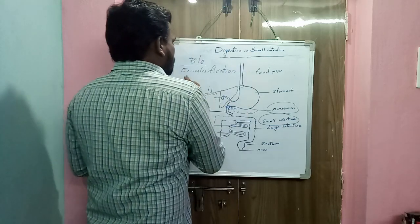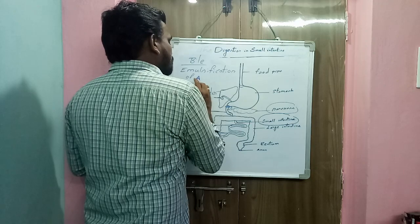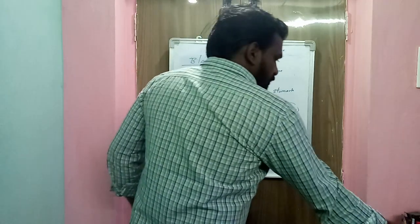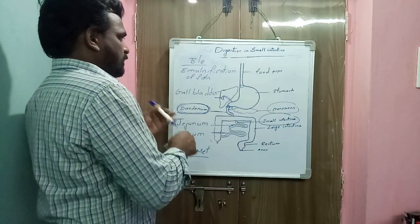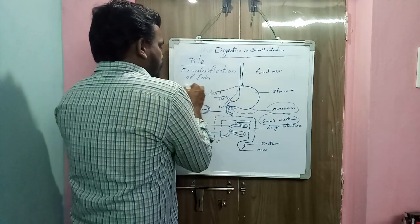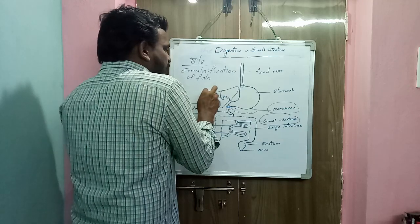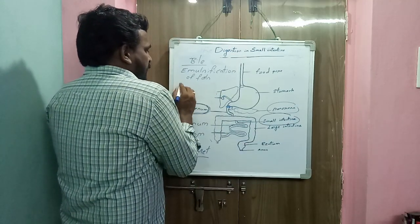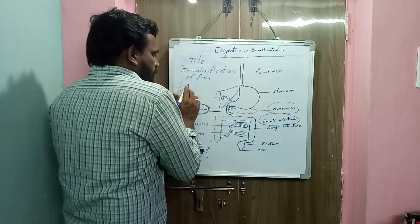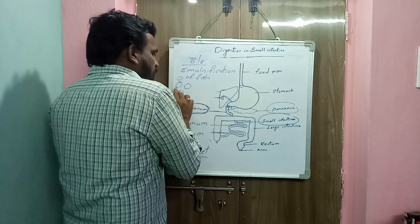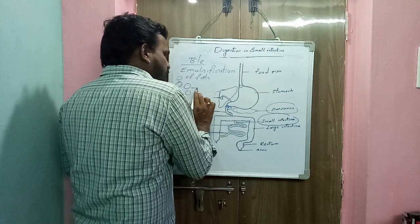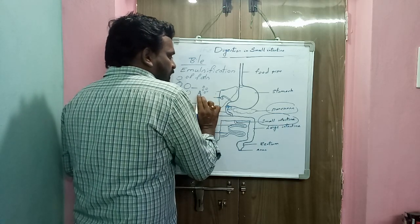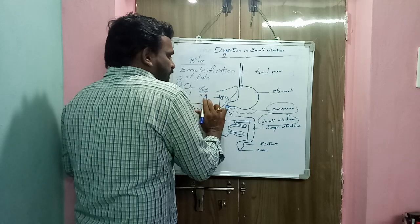The main function of bile is the emulsification of fats. Emulsification means large fat molecules are converted into small globules. This process is called emulsification.